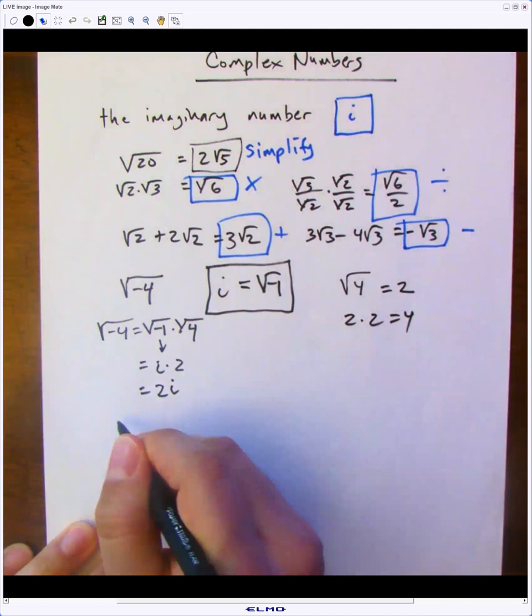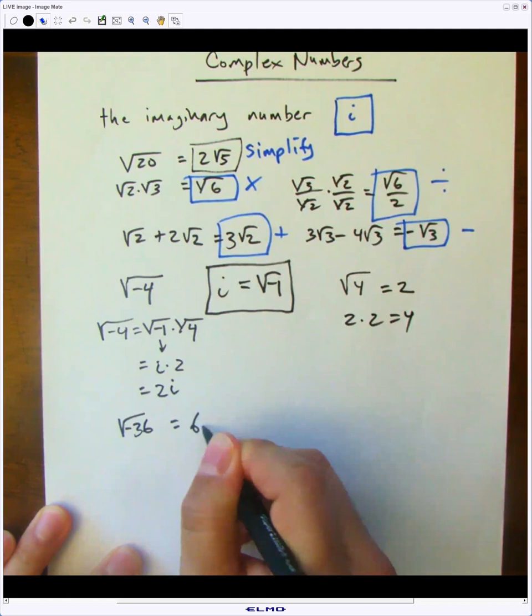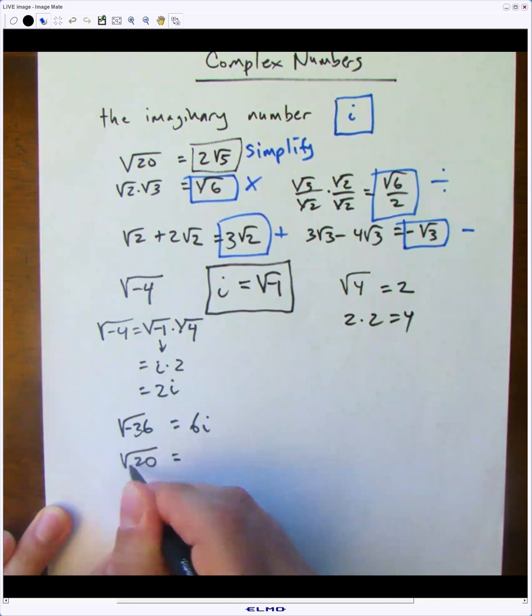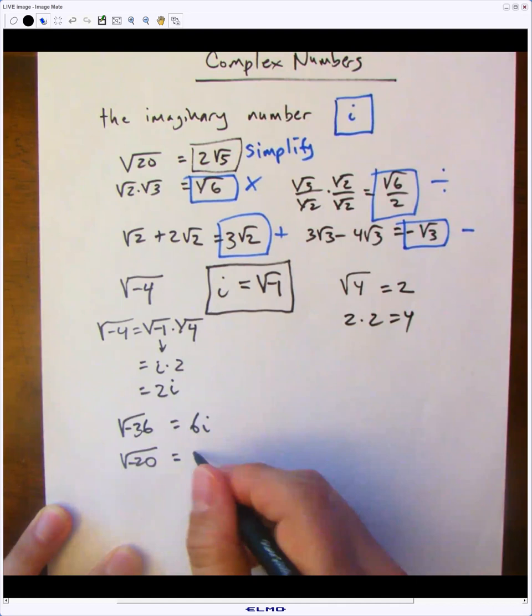So the square root of negative 36 would just be 6i. The square root of negative 20 simplified would be 2 root 5i.